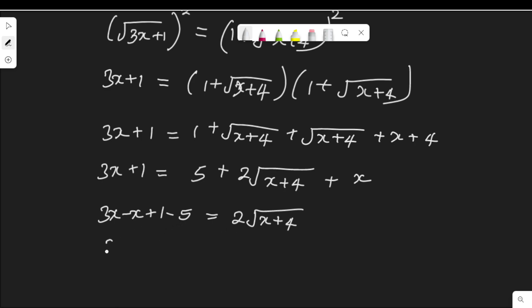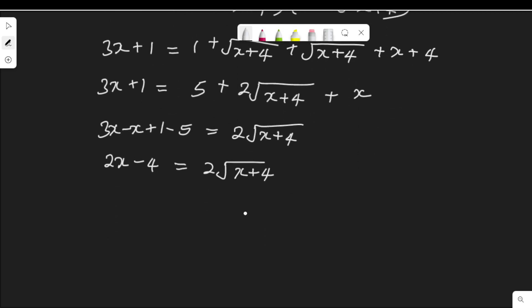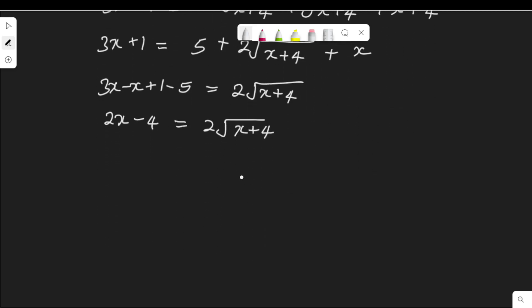3x - x is 2x. 1 - 5 is -4, equal to 2√(x+4). Now, to clear this radical, I will square both sides again. So on the left-hand side, that would be (2x - 4)² = (2√(x+4))².